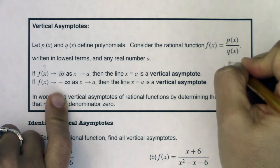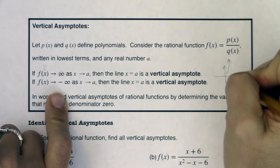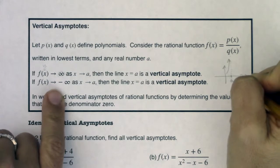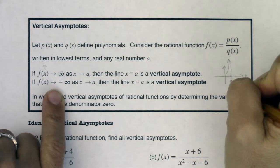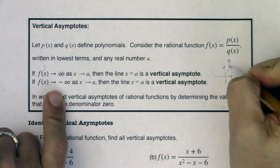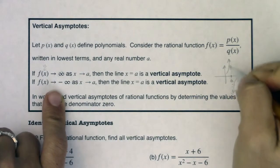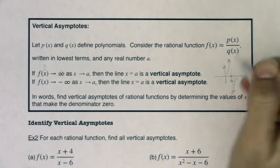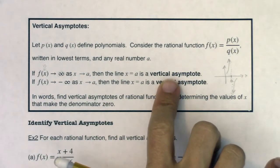So my graph is headed up as I approach x equaling a, or potentially f(x) might be headed down as you approach x equaling a, but there's this boundary line x equaling a, and then we're going to call that a vertical asymptote.